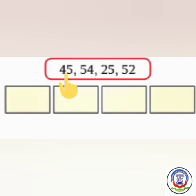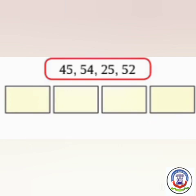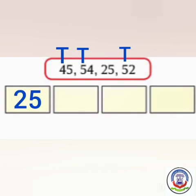Next is 45, 54, 25 and 52. We have to arrange them in ascending order — that is, from small to big. First we will find the smallest number. We will first see the tens place. The numbers are 4, 5, 2, 5. Which number is smallest? Here, 2 is smallest. So we will write 25 first in a box. From the remaining numbers, the tens place gives 4, 5, and 5. Here, 4 is smallest. So we will write 45 after 25 in a box.